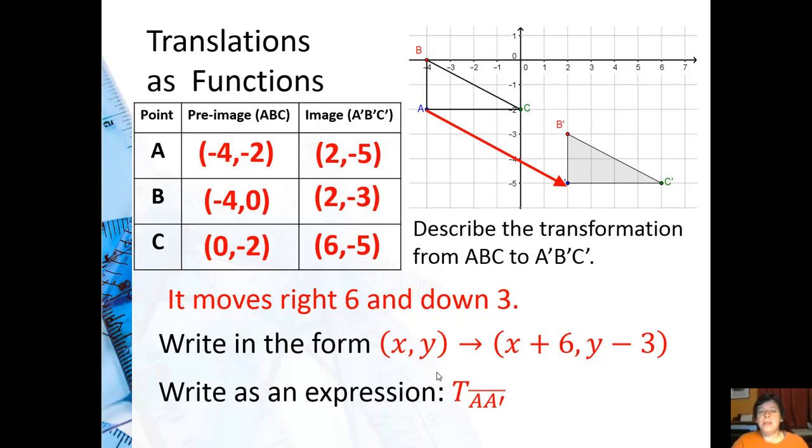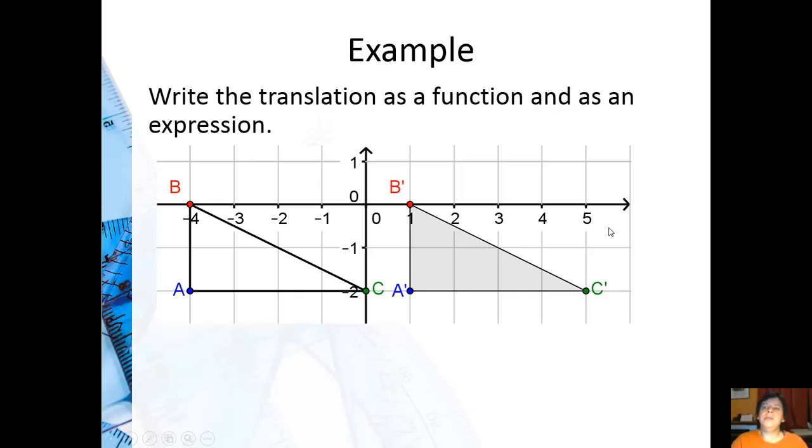Now, we can always write this as an expression. And the way you do it is you do this T for translation. Then you say the two points, the original point on the pre-image and the final point on the image. So, in this case, I could say A to A prime. Or I could say B to B prime or C to C prime.